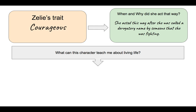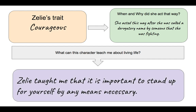The last part of this is you're going to ask yourself: what can this character teach me about life? What can this situation teach me about living life? Here's what I said: Zelie taught me that it is important to stand up for yourself by any means necessary. This could be a theme for the text. By thinking about the way Zelie acted, when she acted that way, and then asking myself what can this teach me about living life, I'm able to come up with a statement that could be a theme for the book.